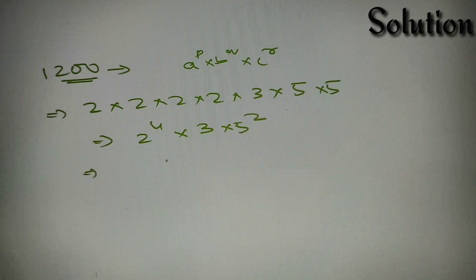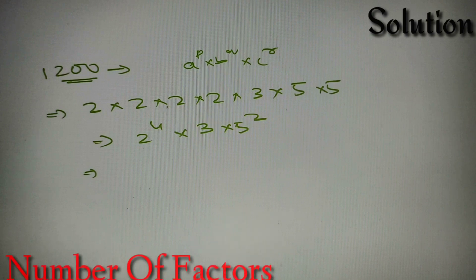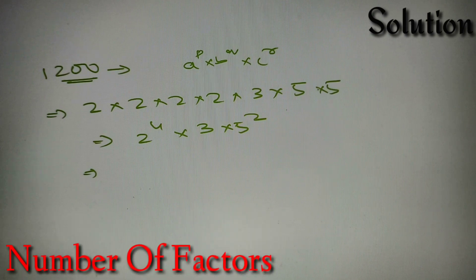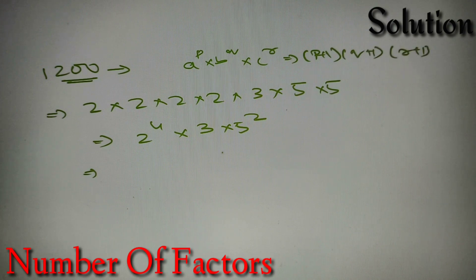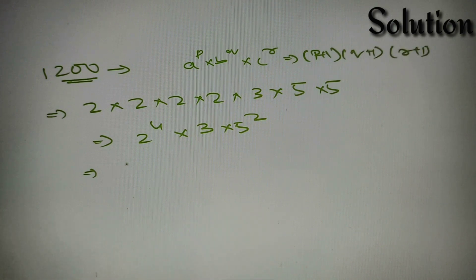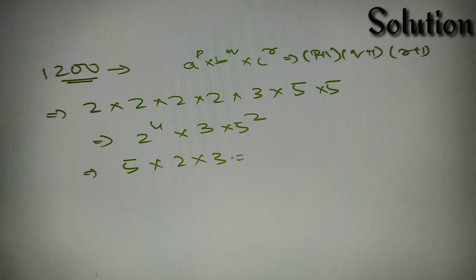The formula for finding the number of factors when the number is in its prime factorized form is: (P + 1) × (Q + 1) × (R + 1) and so on. So our answer is equal to (4 + 1) × (1 + 1) × (2 + 1), which is 5 × 2 × 3.